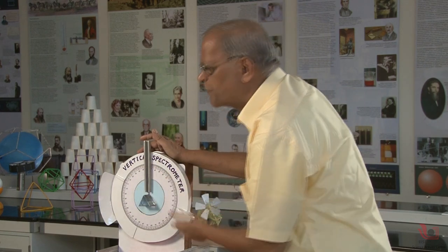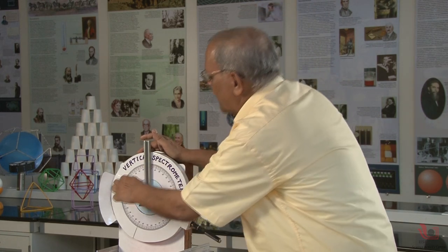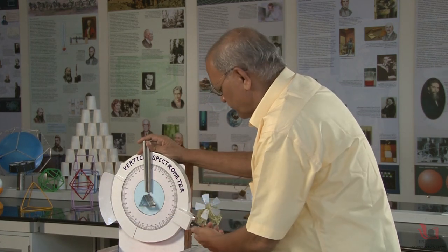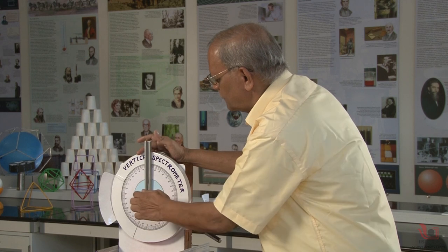But because of this triangular prism, these two bendings are added up, and overall we get a large deviation. This large angle of deviation occurs because we have a triangular prism. Here it is an isosceles triangle with an angle of prism of 60 degrees.